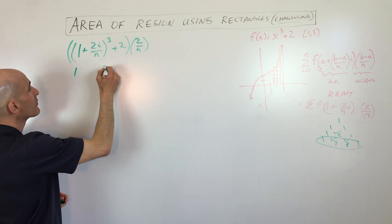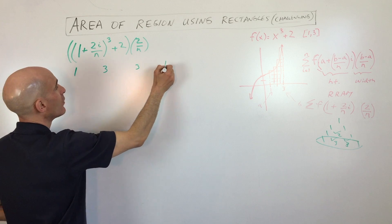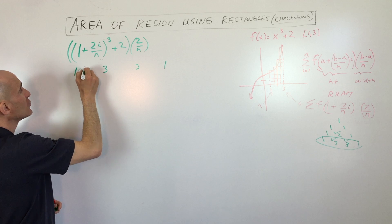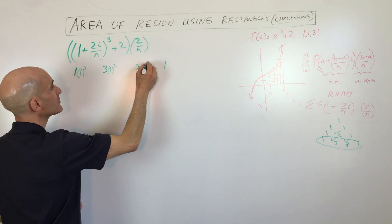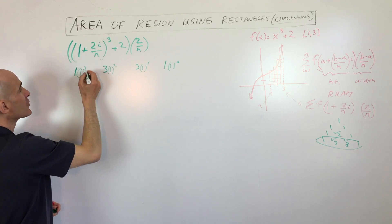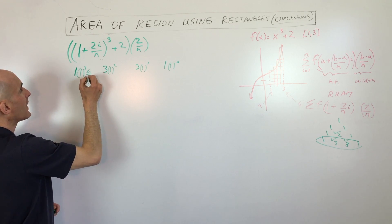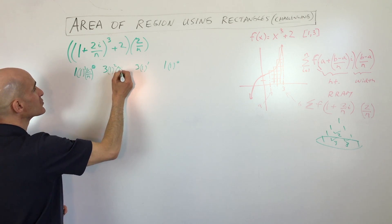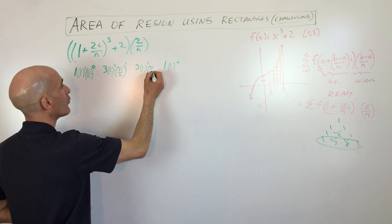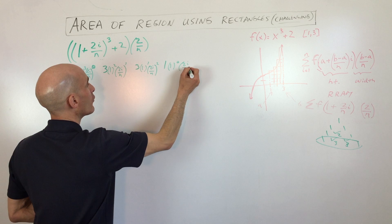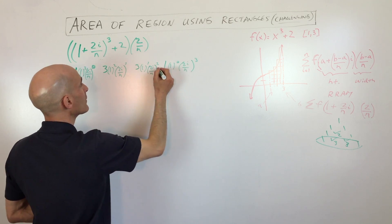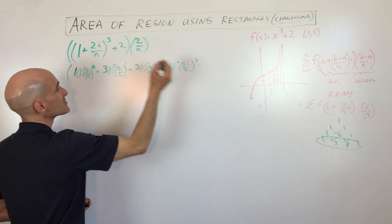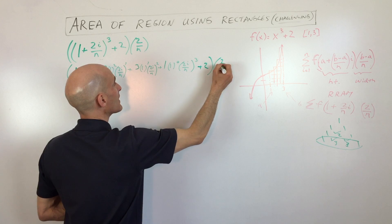Using the coefficients one, three, three, one from row three: the first term's powers are one cubed, one squared, one to the first, and one to the zero. The second term, two-i over N, goes in ascending order: to the zero, to the first, to the second, and to the third. All these terms are added together, and remember this is still plus two, all being multiplied by two over N.